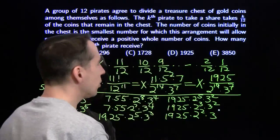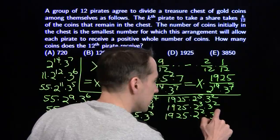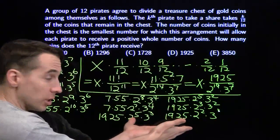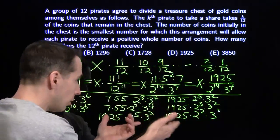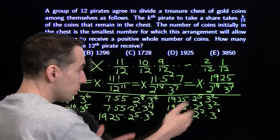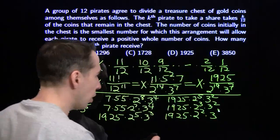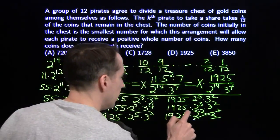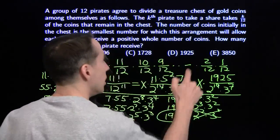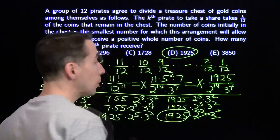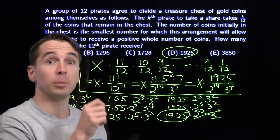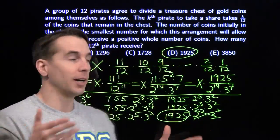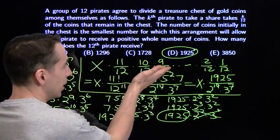Finally, the 11th pirate takes 11/12 of what's left — that works out to a whole number because we have that factor of 12 — leaving 1/12, which is 1925 coins for the last pirate. So if you had just bubbled D and moved on, it all worked out just fine. We're done.